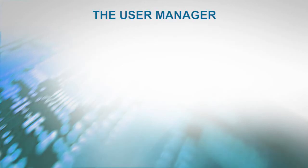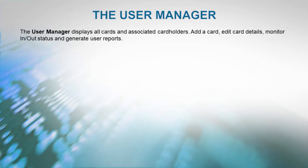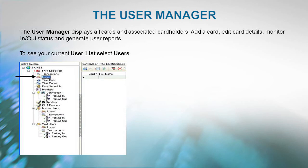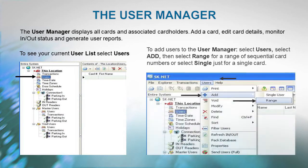The User Manager displays all cards and associated cardholders. This is where you can add a card, edit card details, monitor in-out status, and generate user reports. To see your current user list, select Users. To add users to the User Manager, just select Users, select Add, then select Range for a range of sequential card numbers, or select Single for just a single card.